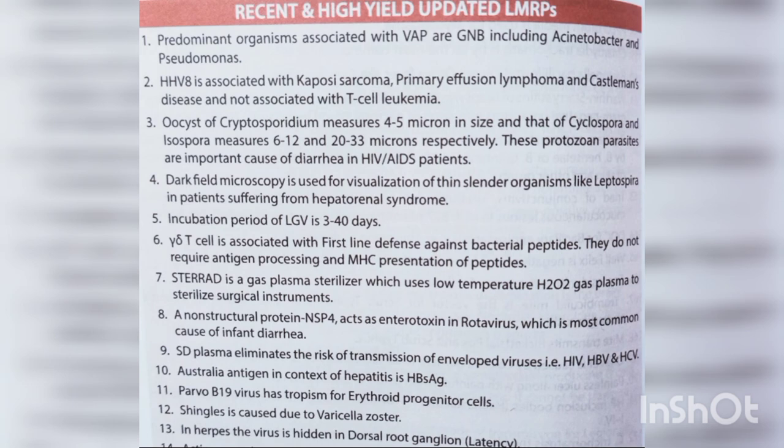Hello everyone, today let us discuss microbiology recent and high-yield updated LMRPs. Predominant organisms associated with VAP are GNB including Acinetobacter and Pseudomonas.